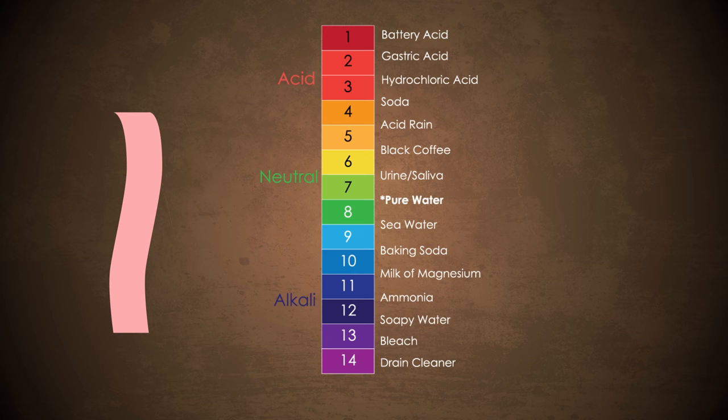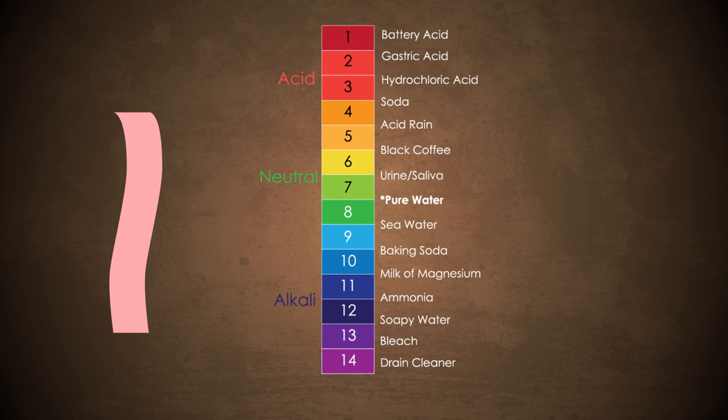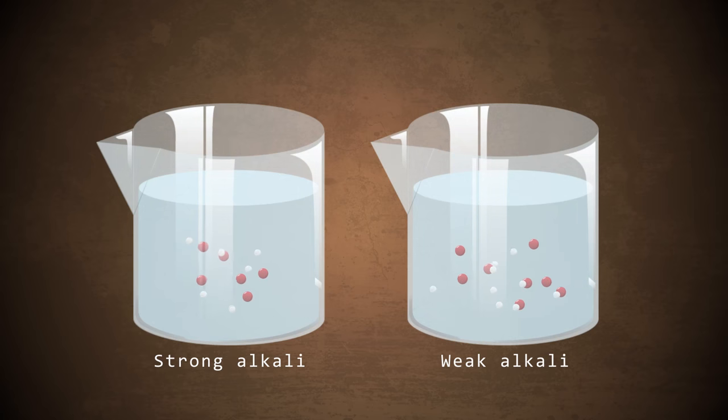In this lesson we will learn about strong alkalis and weak alkalis. An alkali is a soluble base that has a pH greater than 7, turns red litmus paper blue and universal indicator solution green if it is weak and blue to purple if it is strong. But in the absence of universal indicator solution, how can we tell if an alkali is strong or weak?